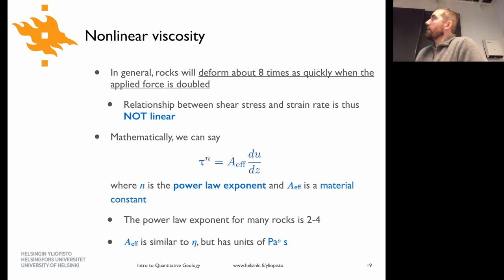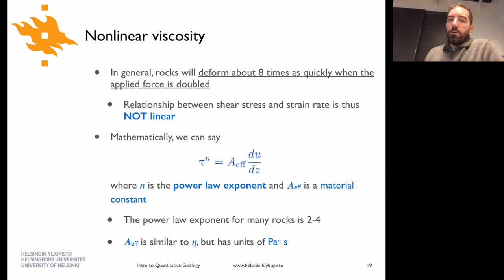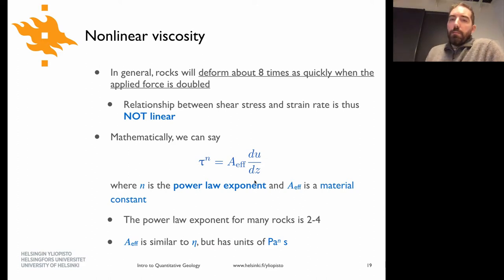The other thing is that rock deformation at the crystal scale — when defects in the crystal move in response to stress — is also not linear. This means we have a relationship between stress and strain rate that is not just stress times viscosity, but stress to some power n equal to something equivalent to viscosity times the strain rate. What that means in practice is that when you apply a force to rock that's twice as large, you get about eight times as much deformation in terms of strain rate.